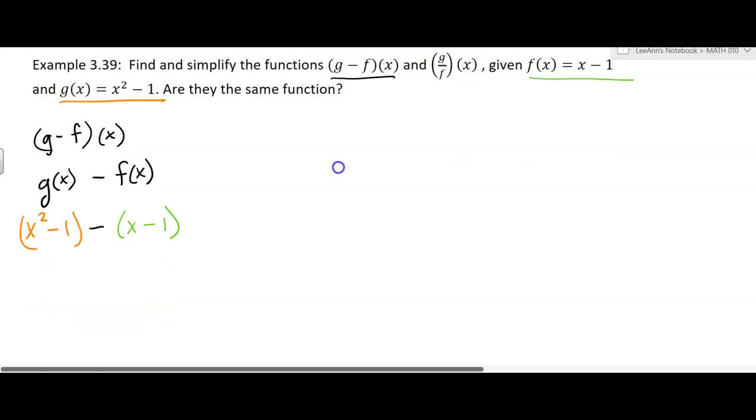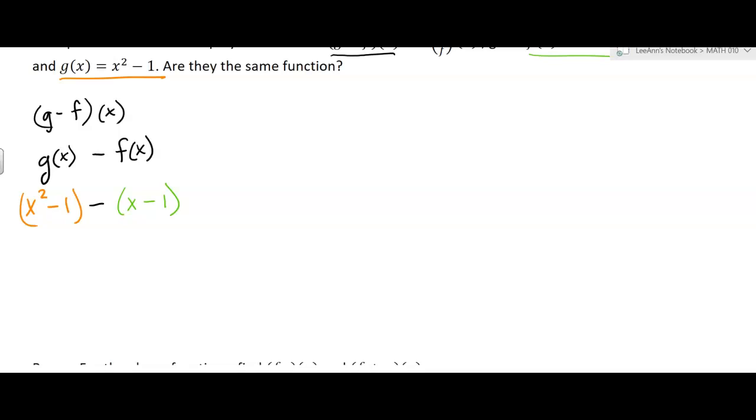Okay, so now we want to put that together and simplify it. So we're going to say x squared minus 1 minus x plus 1. We're distributing the minus sign. And it looks like the ones are canceling out. So we're just going to have x squared minus x.